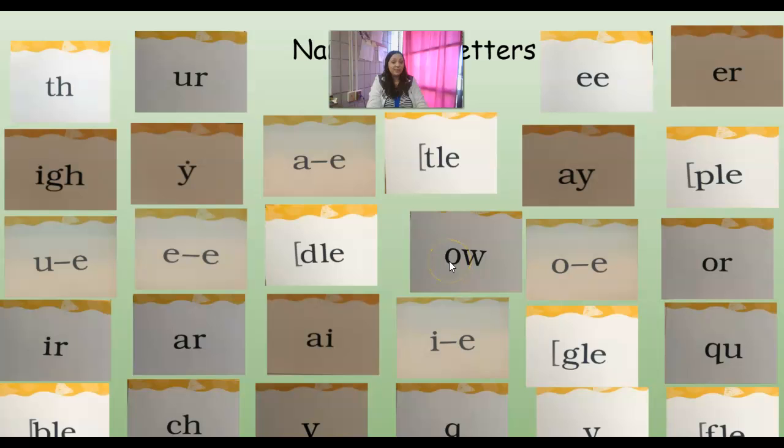This is a new one, remember, digraph OW, O consonant E, combination OR, combination IR, combination AR, digraph AI, I consonant E, final syllable GLE, combination QU, final syllable BLE, digraph CH Y, QV, final syllable FLE.